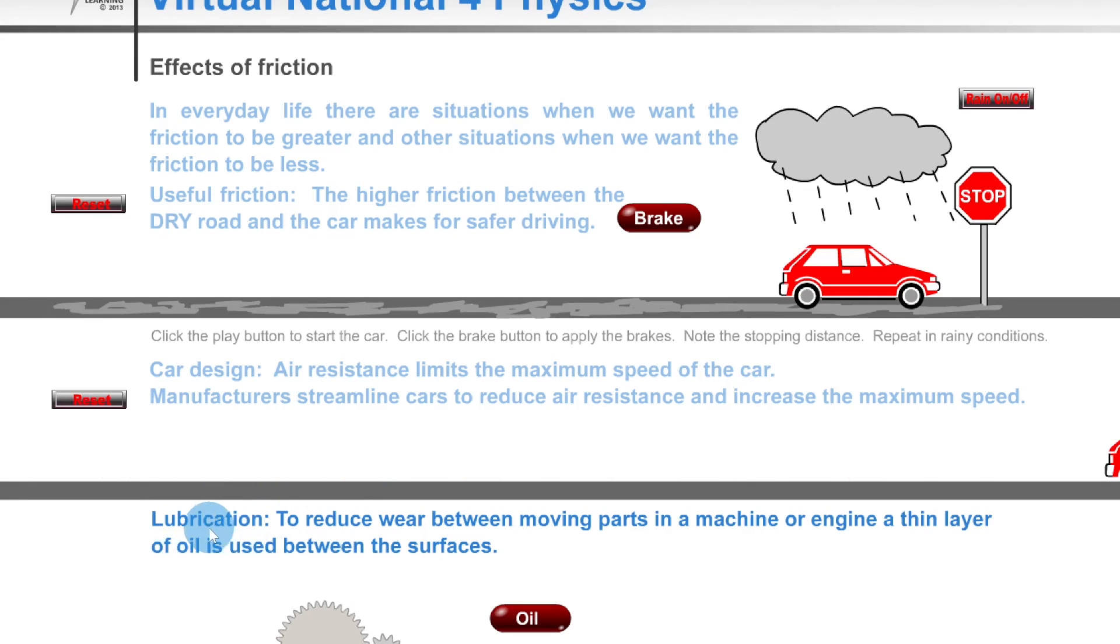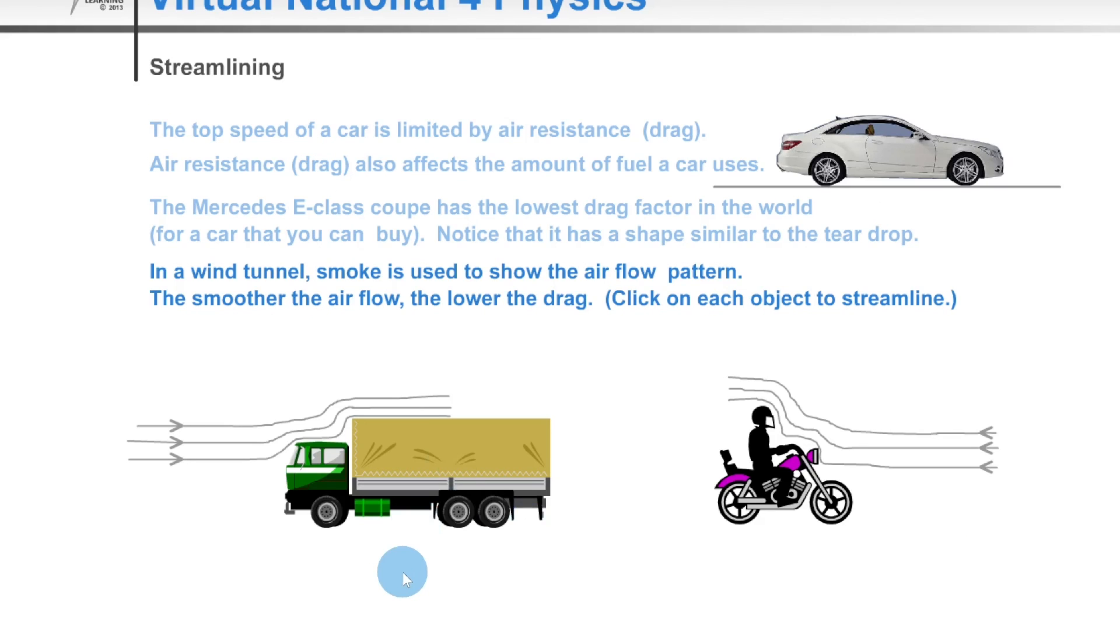And lastly, we have lubrication. Here we have some kind of mechanism, and we can apply oil to that to decrease the friction and make it move more easily. And lastly, streamlining here, we've got a lorry and a motorbike, and we can click on them to see how changing the shape on the front of the vehicle could actually allow the air to pass more easily over it, to make it more streamlined.